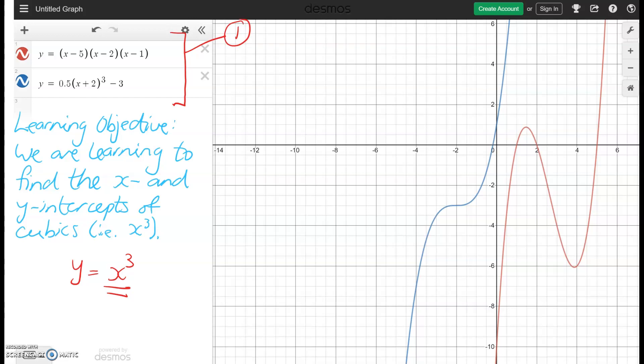The x intercepts are the points of the graph where the cubic touches the x axis. And at these points, we know that y is always going to be equal to zero because they are touching the x axis, which runs through y equals zero. Therefore, to find the x intercepts, we need to make our equation equal to zero.